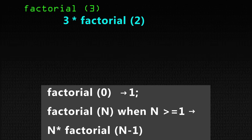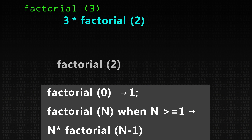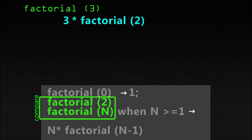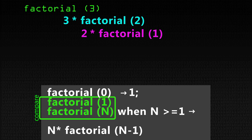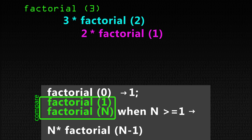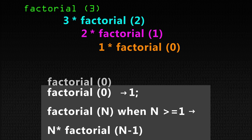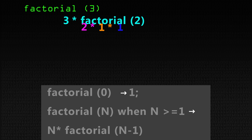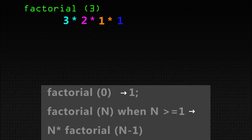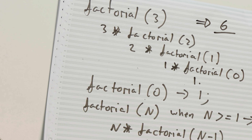3 is greater than or equal to 1, so we call 3 times factorial of 2. 2 will fail pattern matching on the first clause, it will match on the second, and N gets rebound to 2. So we call 2 times factorial of 1, which similarly gives us 1 times factorial of 0. 0 pattern matches in the first clause — the base case — we return 1. And at this point we do 1 times 1 times 2 times 3 and return 6.